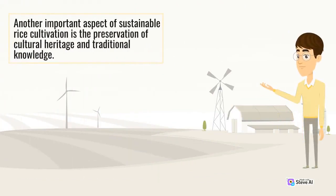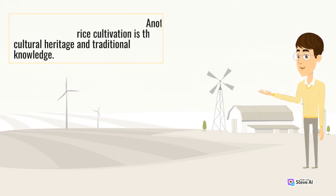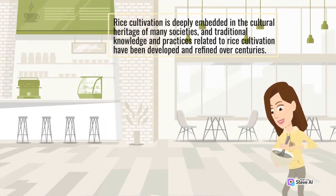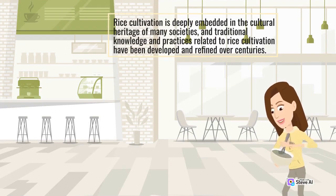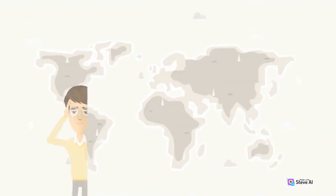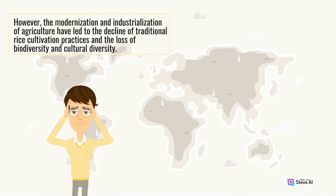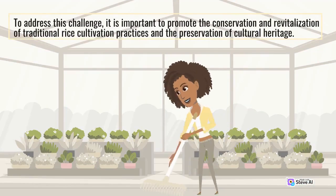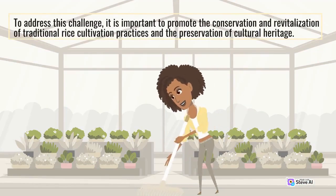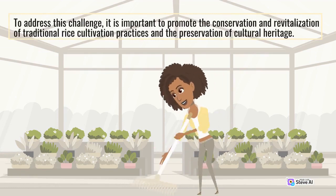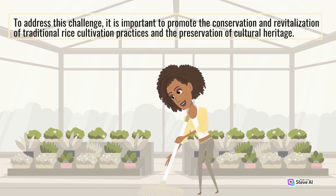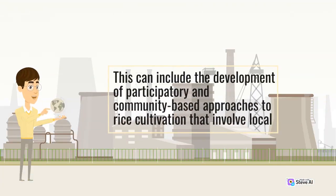Another important aspect of sustainable rice cultivation is the preservation of cultural heritage and traditional knowledge. Rice cultivation is deeply embedded in the cultural heritage of many societies, and traditional knowledge and practices related to rice cultivation have been developed and refined over centuries. However, the modernization and industrialization of agriculture have led to the decline of traditional rice cultivation practices and the loss of biodiversity and cultural diversity. To address this challenge, it is important to promote the conservation and revitalization of traditional rice cultivation practices and the preservation of cultural heritage. This can include the development of participatory and community-based practices.